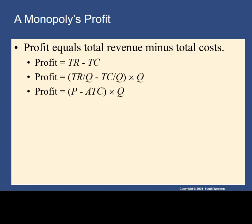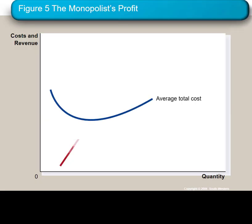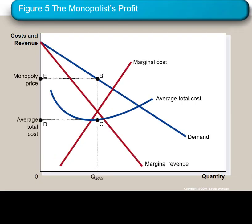It's handy to note that we can always write profit — not just the monopolist's profit, but we saw this in competition too — as price minus average total cost times the quantity the firm is selling. Going back to our graph, we can identify the monopolist's profit. Point B identifies the price on the demand curve that will enable the monopolist to sell all of its quantity, and point C is the average total cost.